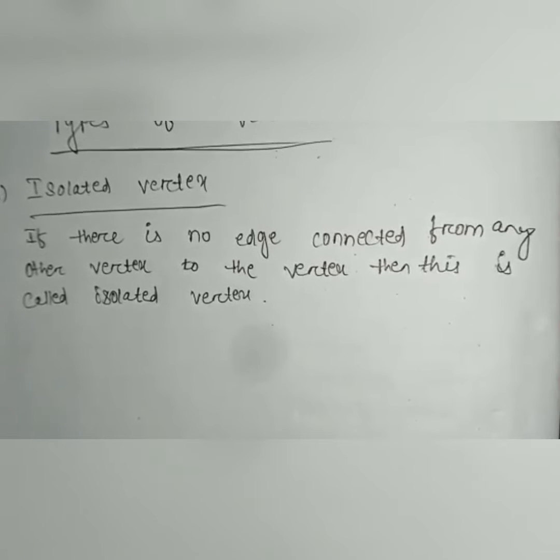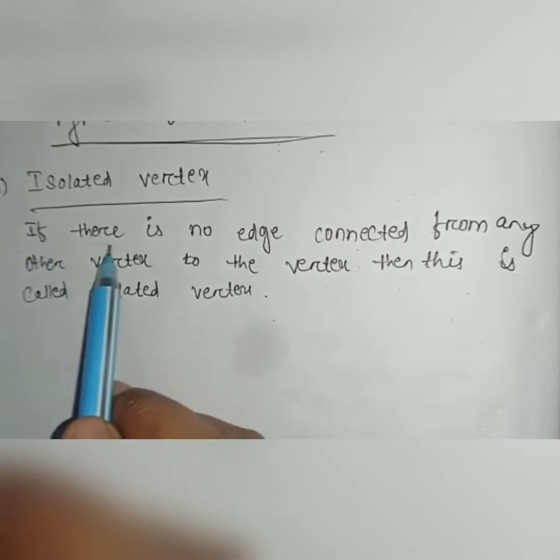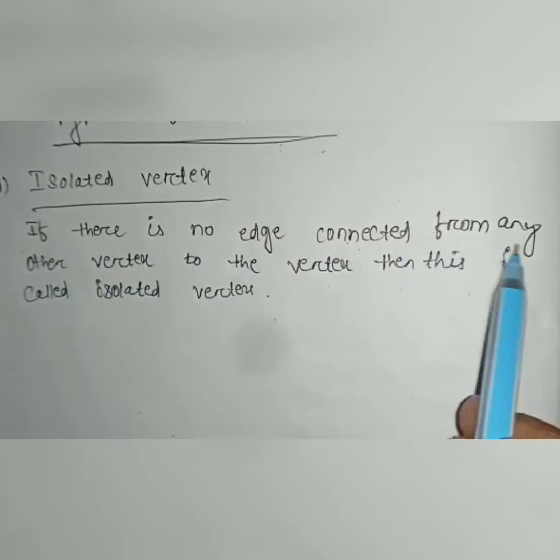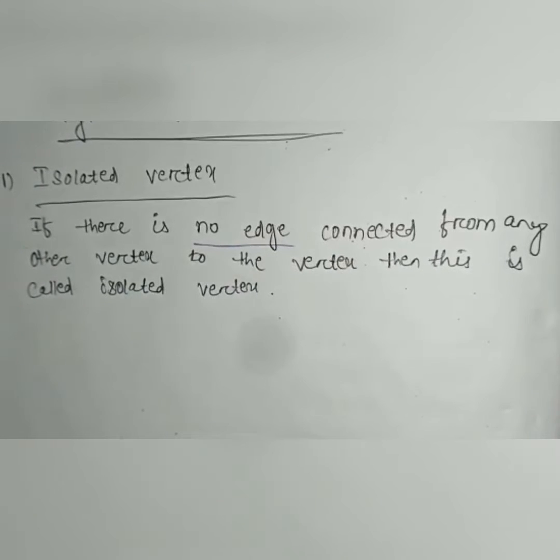So the first question is, what is isolated vertex? If there is no edge connected from any other vertex to the vertex, then this is called isolated vertex.